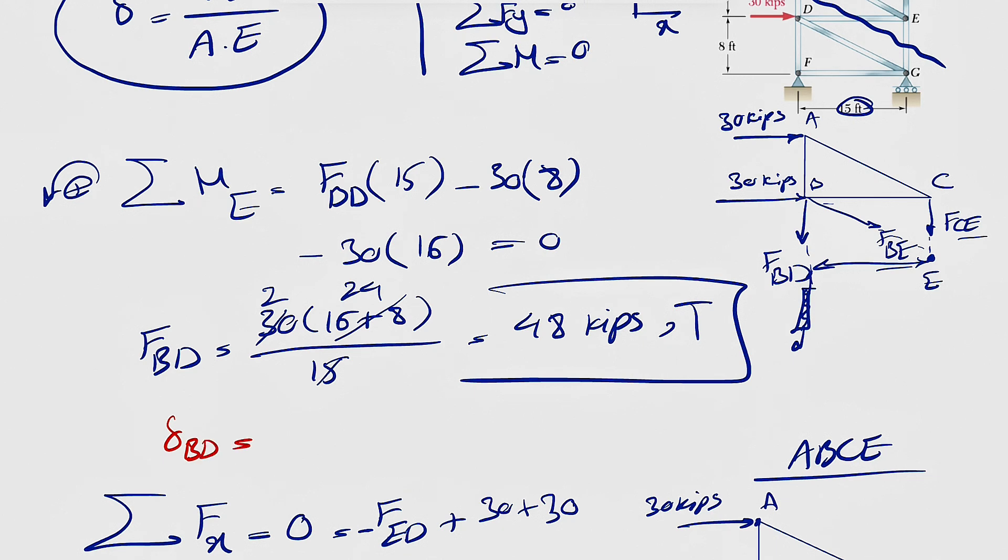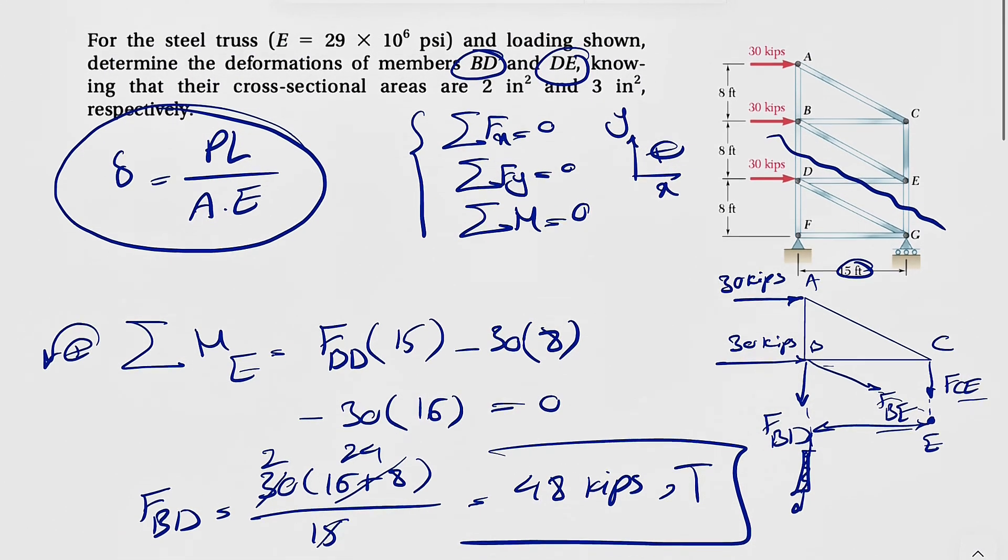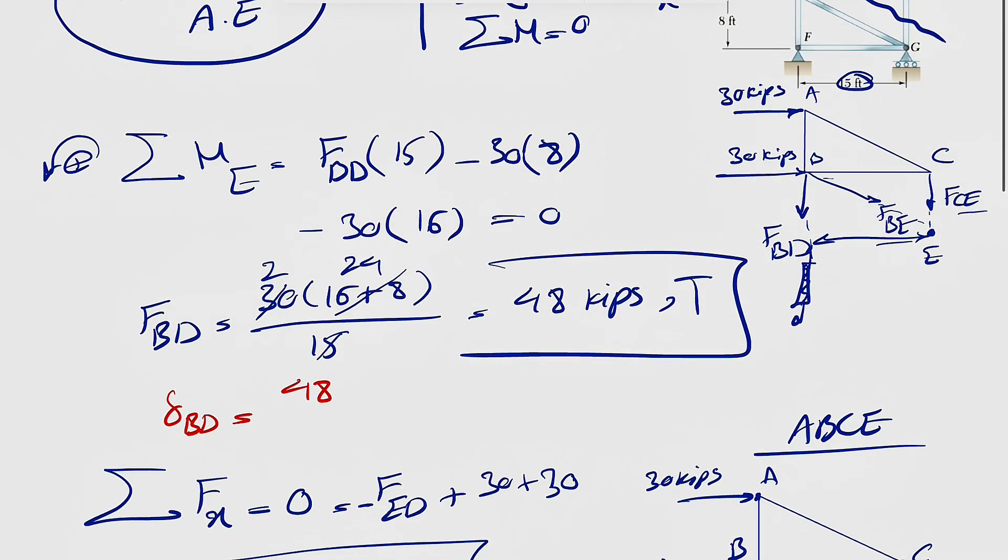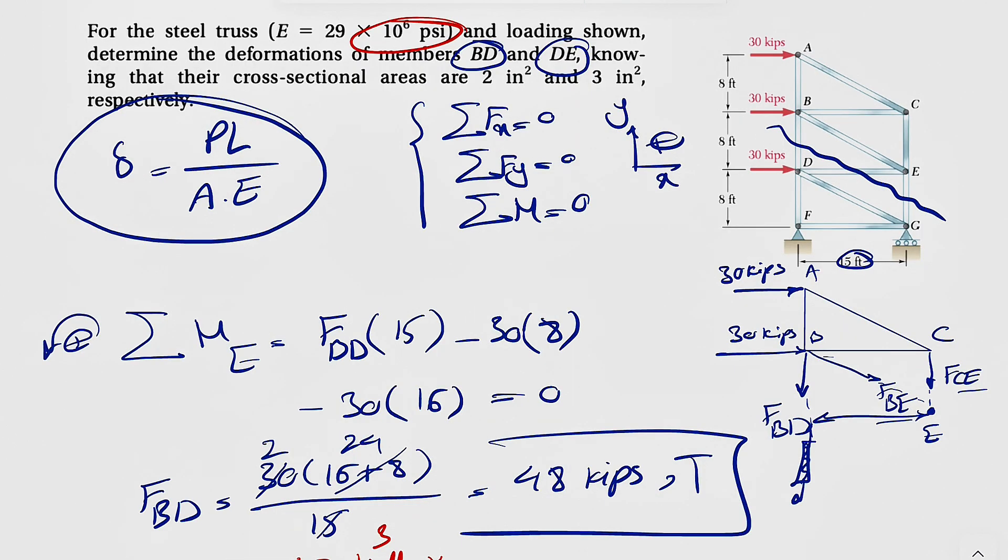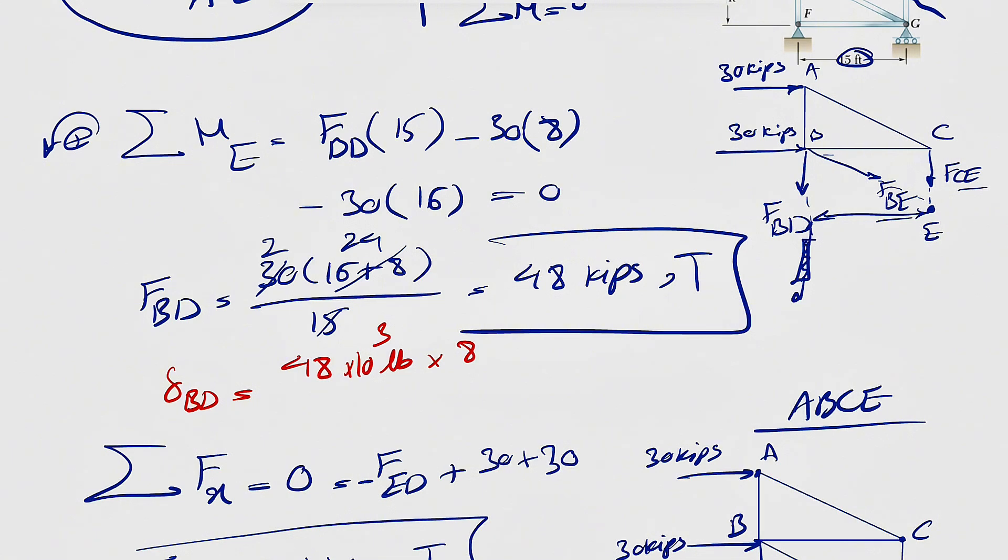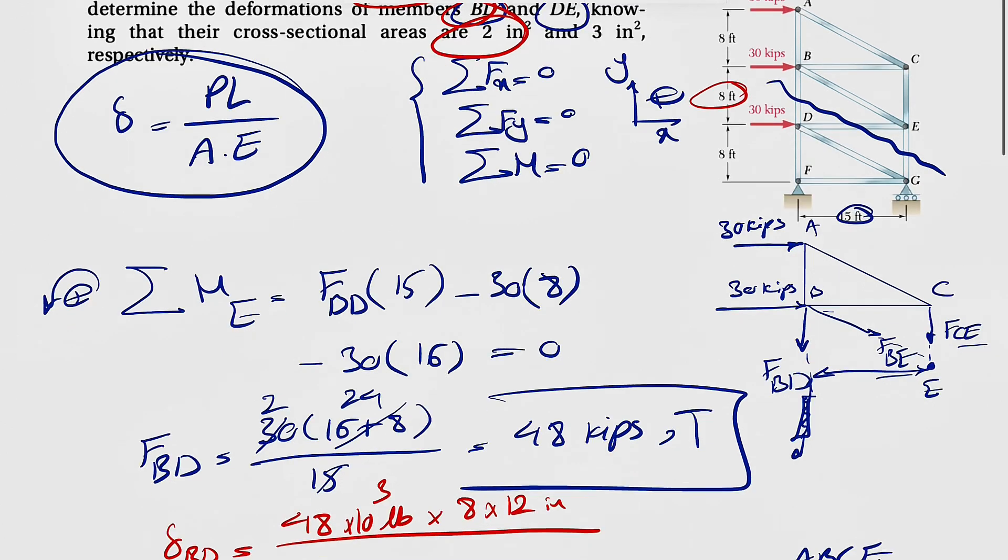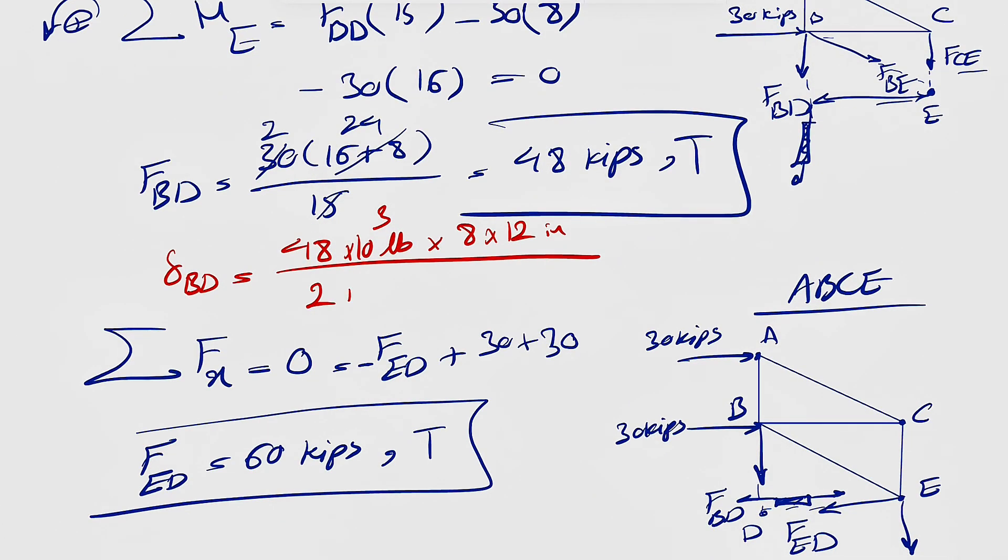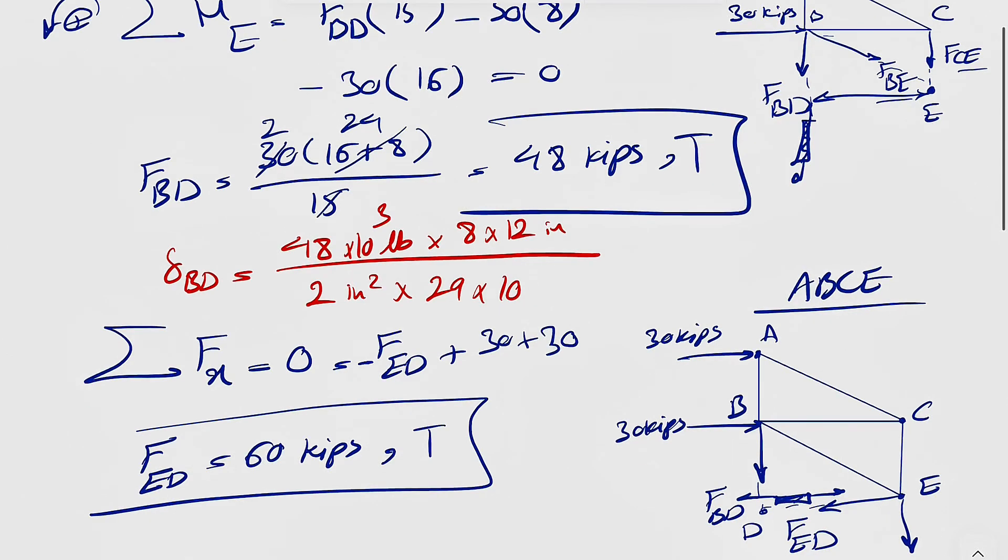Let's start with member BD. So the force we figured is 48 kips. And since we have the elastic modulus in PSI, it would be pound per inch squared. So we're going to multiply kips by 1,000 to get it in pounds. The length of member BD would be 8 feet. Again, we need another unit conversion. And 1 foot is 12 inches, so we're going to multiply this by 12 in order to get it in inches. And the question told us that the BD has 2 inches squared cross-sectional area, so 2 inches squared. And the elastic modulus is 29 times 10 to the 6th PSI.